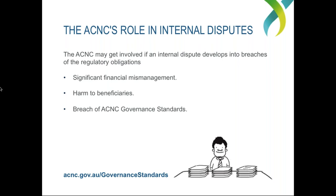Some examples of things the ACNC can look into include significant financial mismanagement — maybe something that caused an internal dispute. If the charity is causing harm to its beneficiaries, this may be something the ACNC can look into. And quite broadly, if there's a breach of the ACNC governance standards, we can look into that. There's a URL at the bottom of the slide — acnc.gov.au/governancestandards — which covers a set of core minimum standards by which the ACNC requires all charities to operate. We'll include this link in the follow-up email.